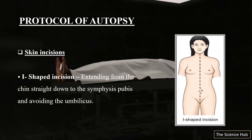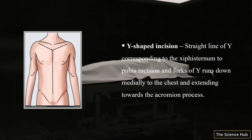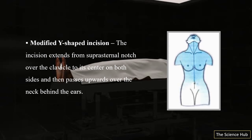Now the protocol for skin incisions. The first is the I-shaped incision, extending from the chin straight down to the symphysis pubis, avoiding the umbilicus — as you can see in the image. The Y-shaped incision: the straight line of the Y corresponds to the sternum-to-pubis incision, and the forks of the Y run down medially to the chest extending towards the acromion process.